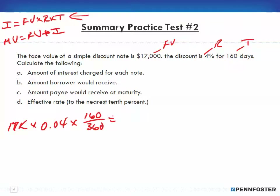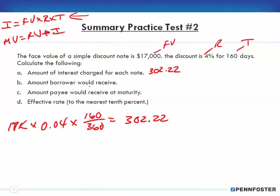I'm going to do all the math: 17,000 times 0.04 times 160, divided by 360. My interest ends up being $302.22.